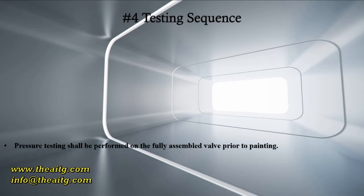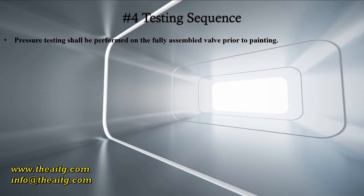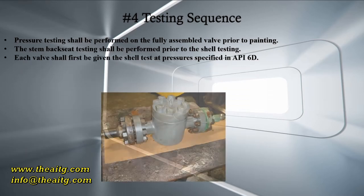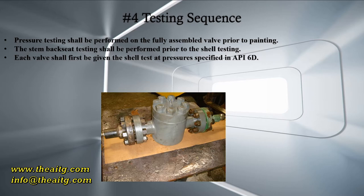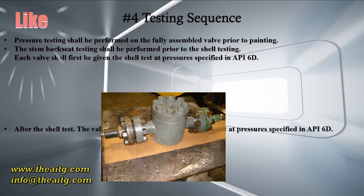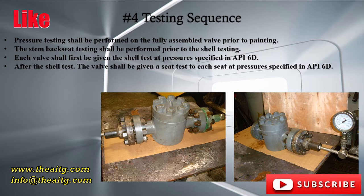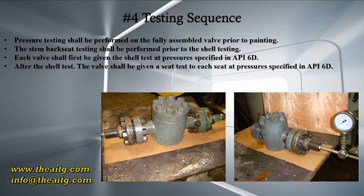Testing sequence: pressure testing shall be performed on the fully assembled valve prior to painting. The stem backseat testing shall be performed prior to the shell test. Each valve shall first be given the shell test at the pressure specified in API 6D. After the shell test, the valve shall be given a seat test to each seat at the pressure specified in API 6D.